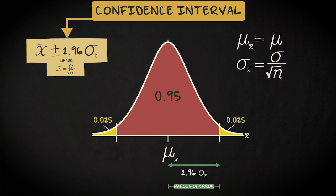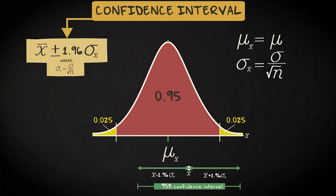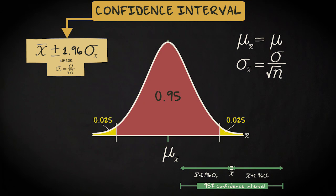Now pay close attention because this is a little complicated. Suppose you draw a sample. The mean of this sample is represented by this dot. The lines here represent the margins of error on both sides of the mean. Together they form the 95% confidence interval. If the sample mean falls within the red area, then the confidence interval contains the population mean mu. However, if the sample mean does not fall within the red area, the confidence interval does not contain population parameter mu.